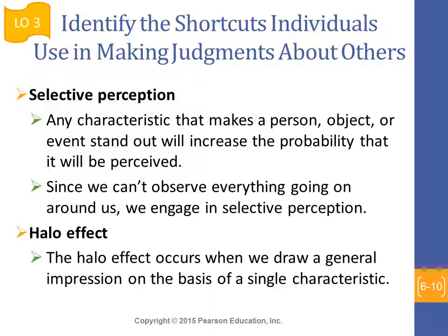The first perceptual shortcut is selective perception. Any characteristic that makes a person, object, or event stand out has a higher probability of being noticed. Since we can't observe everything around us, we engage in selective perception, which can lead to erroneous judgments.